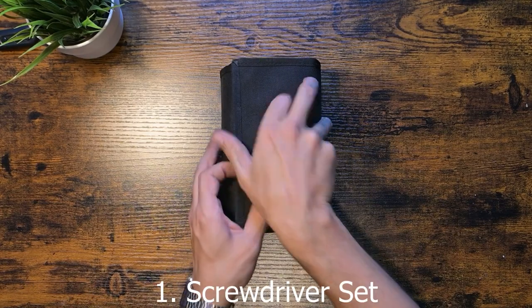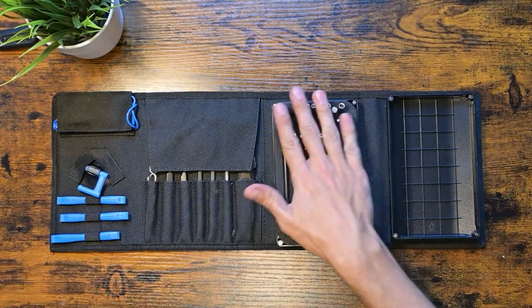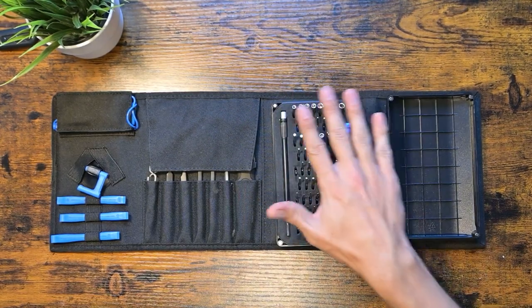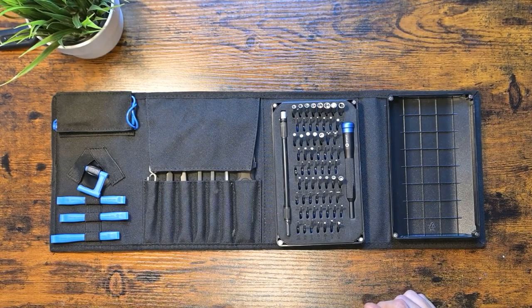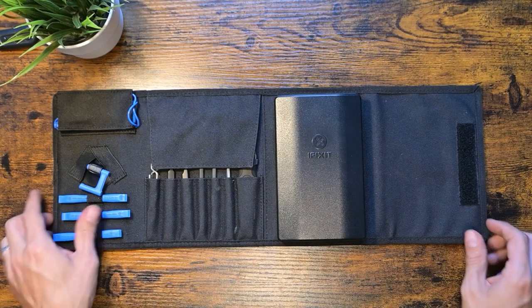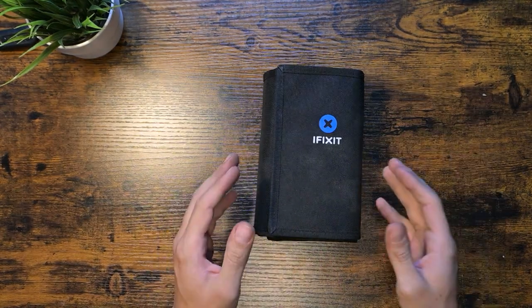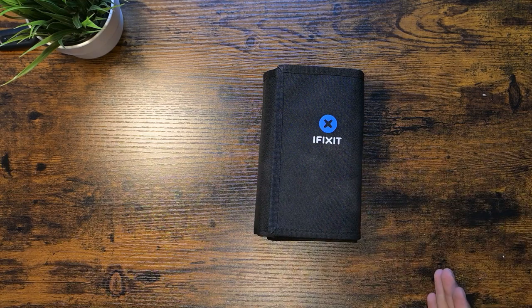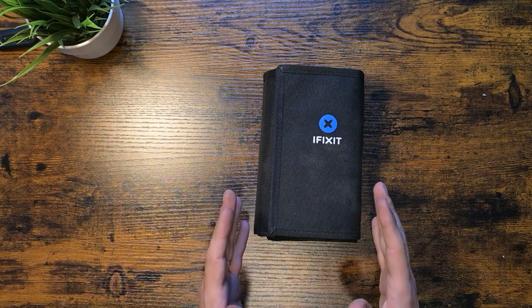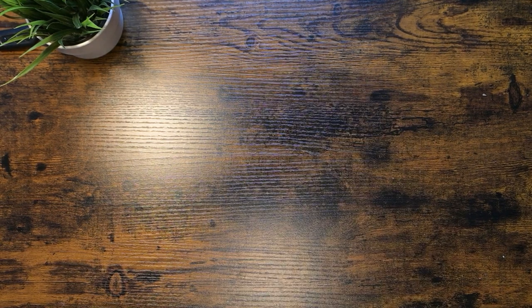Our first essential tool is a good quality screwdriver set. This kit has a wide range of bits with some very particular ones like a special bit for opening Nintendo consoles. A screwdriver set is incredibly versatile and it comes in handy for a wide range of repairs. Mine in particular is an iFixit toolkit. This one isn't cheap but they're high quality and I want to support the company as they are strong supporters of the right to repair.